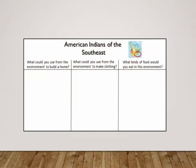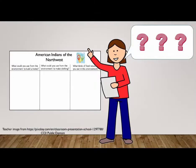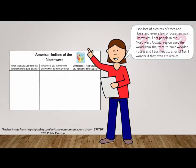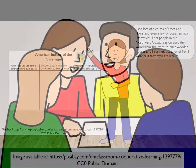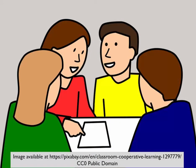When students visit a station, they should carefully examine the images found there. Using these images alone, they should answer the three questions found on each chart. You may wish to model this for students by thinking aloud. For example: I see lots of pictures of trees and rivers and even a few of ocean animals like whales. I bet people in the northwest coastal region used the wood from the trees to build wooden houses, and I bet they ate a lot of fish. I wonder if they even ate whales. Students will rotate through the stations and put their ideas on the charts. You don't want groups to be too big, nor do you want groups to spend too much time at any one chart. This is a fast-moving activity to get kids thinking about the impact the environment had on the lives of American Indians in different regions.